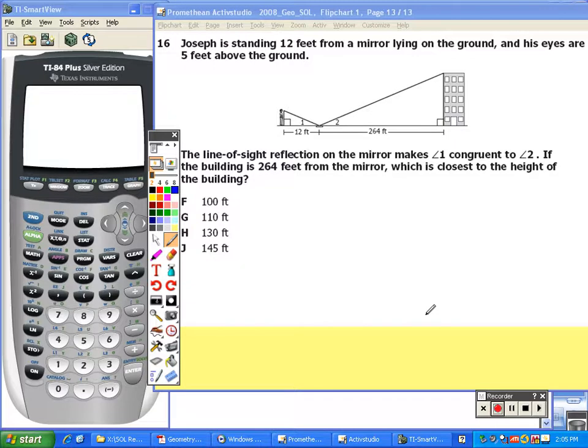Joseph is standing 12 feet from a mirror lying on the ground, and his eyes are 5 feet above the ground. The line of sight reflection on the mirror makes angle 1 congruent to angle 2. If the building is 264 feet from the mirror, which is closest to the height of the building.